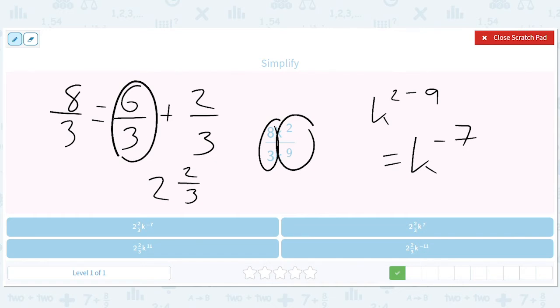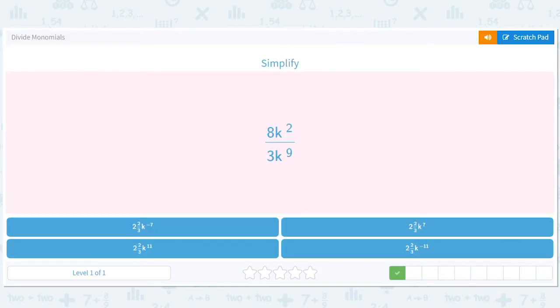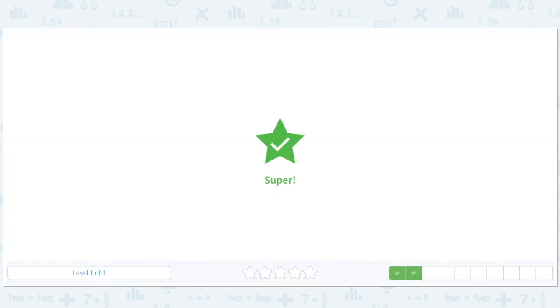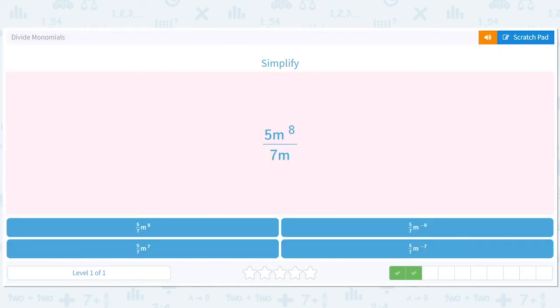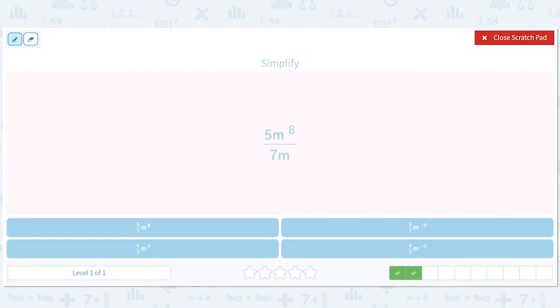So 2 and 2 thirds, k to the negative 7. Okay. How about this? 5 sevenths. And this is going to be m to the 8th minus 1, or m to the 7th.